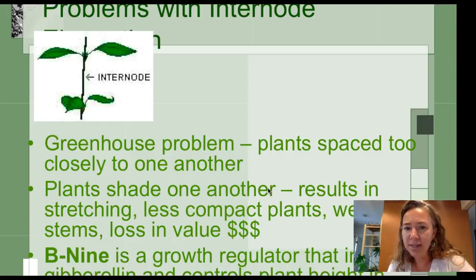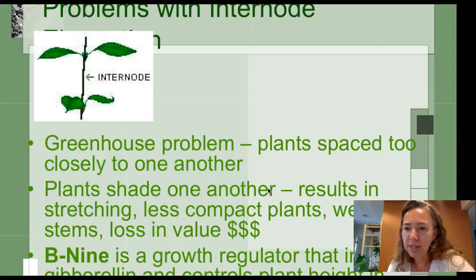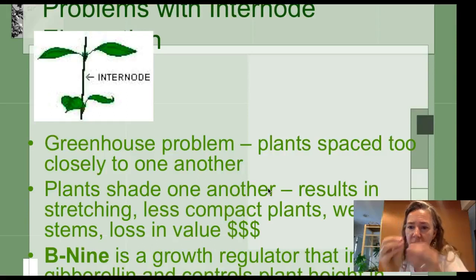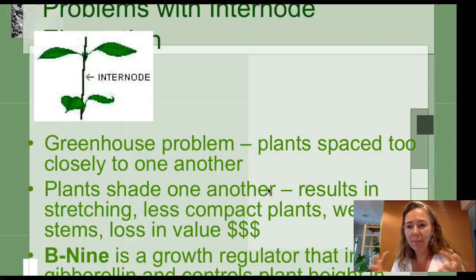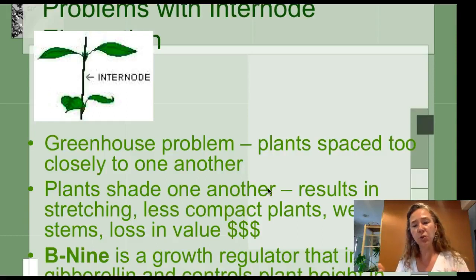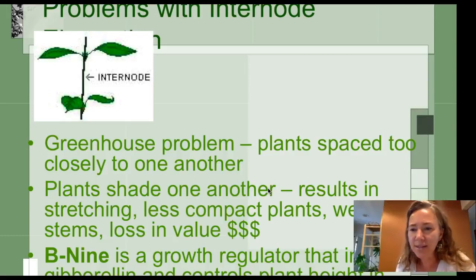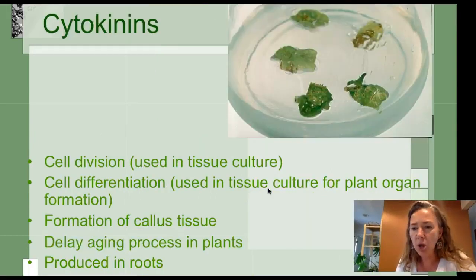That shading results in weaker plants that break when we ship them. So we have a product on the market called B9, and it's a growth regulator that inhibits gibberellic acid — the gibberellins — from being produced. In doing so, instead of having long, tall plants, we actually have more compact growth. If you think about the appearance of a plant, you're not really buying it for the stems — you're looking at that foliage or the flower. So we use this sometimes in greenhouse production. Poinsettias are a good example, where instead of having long, tall growth, we've got nice, compact, bushy growth.